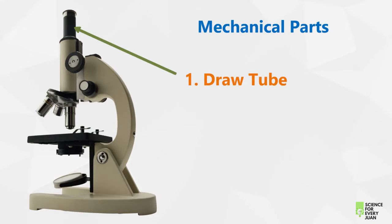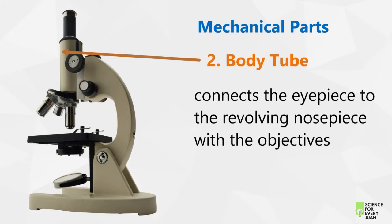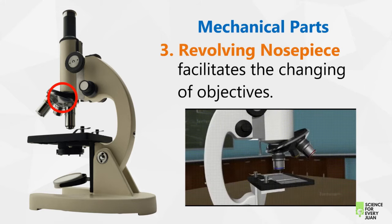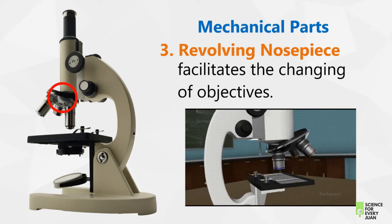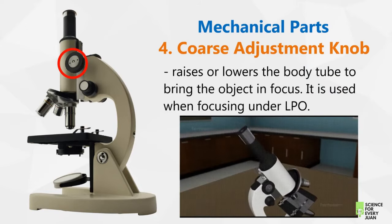Now let's look at the mechanical parts of the microscope. The first one is the draw tube, which holds the ocular. The next one is the body tube, which connects the eyepiece to the revolving nosepiece with the objectives. The revolving nosepiece facilitates the changing of objectives, such as switching from LPO to HPO or vice versa. The coarse adjustment knob raises or lowers the body tube to bring the object in focus, and is used when focusing under the low power objective.